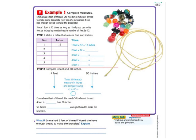Well, we got to see if 4 feet is equal to, more than, or less than 50 inches. So we're going to have to change feet into inches. And it tells us here, since 1 foot is 12 times as long as an inch, you can write feet as inches by multiplying the number of feet by 12.